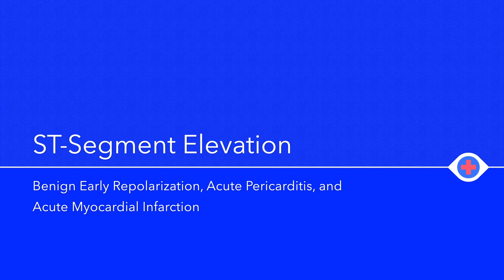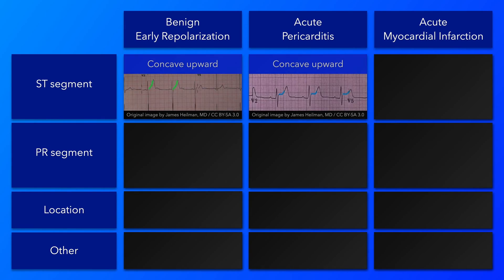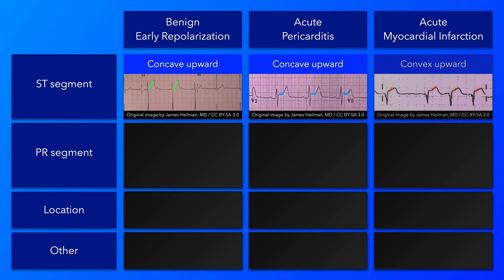This video will compare the electrocardiographic findings in three conditions associated with ST segment elevation. Benign early repolarization and acute pericarditis are both associated with ST segment elevation with a concave upward ST segment. With acute myocardial infarction, on the other hand, the ST segment has a convex upward shape.